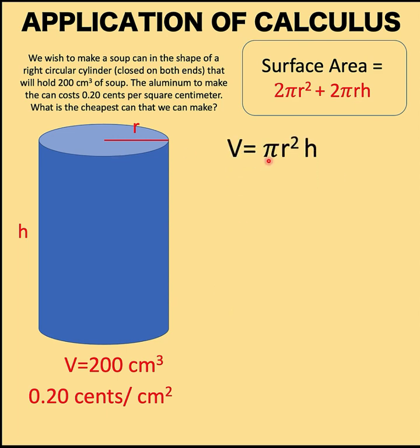Next, we know that the formula to find the volume of this right circular cylinder equals the area of the base times the height. The base is circular with area πr², and the height is the variable h. It is given that the volume must be 200 cubic centimeters. So let's replace V with 200 and solve for h. h equals 200 over πr².